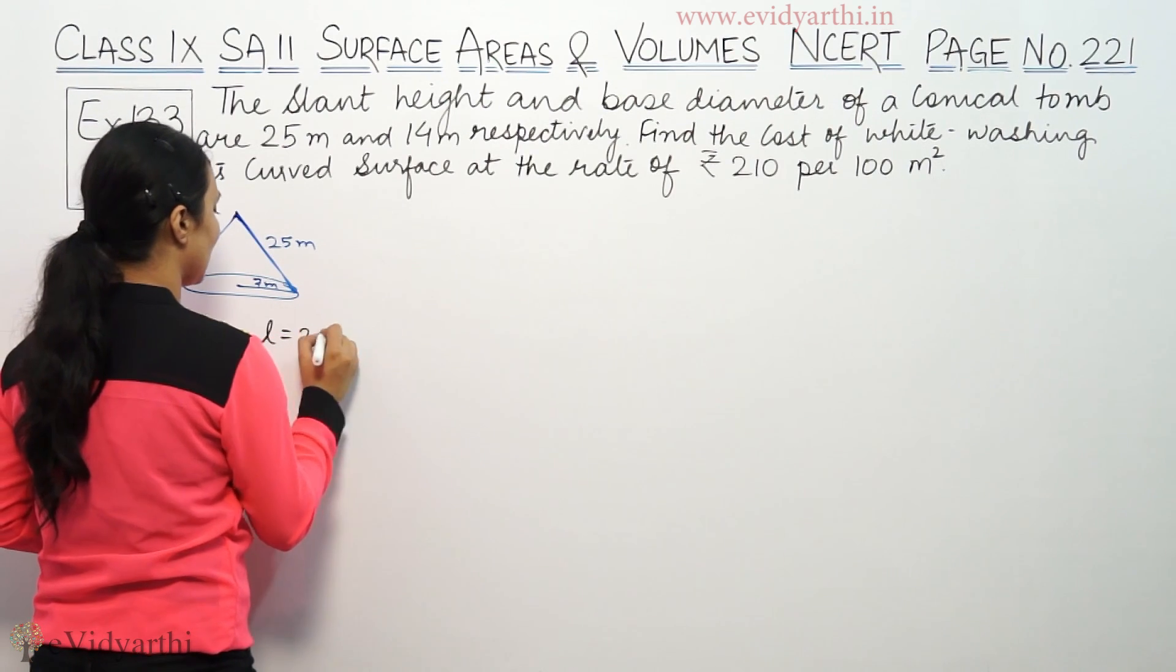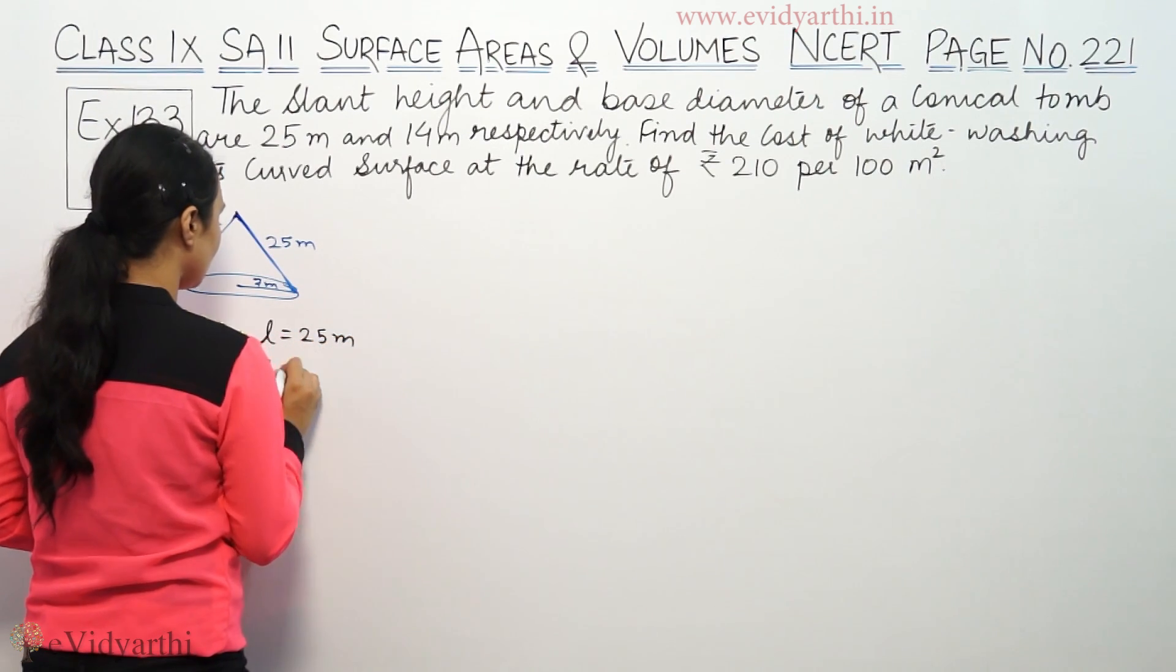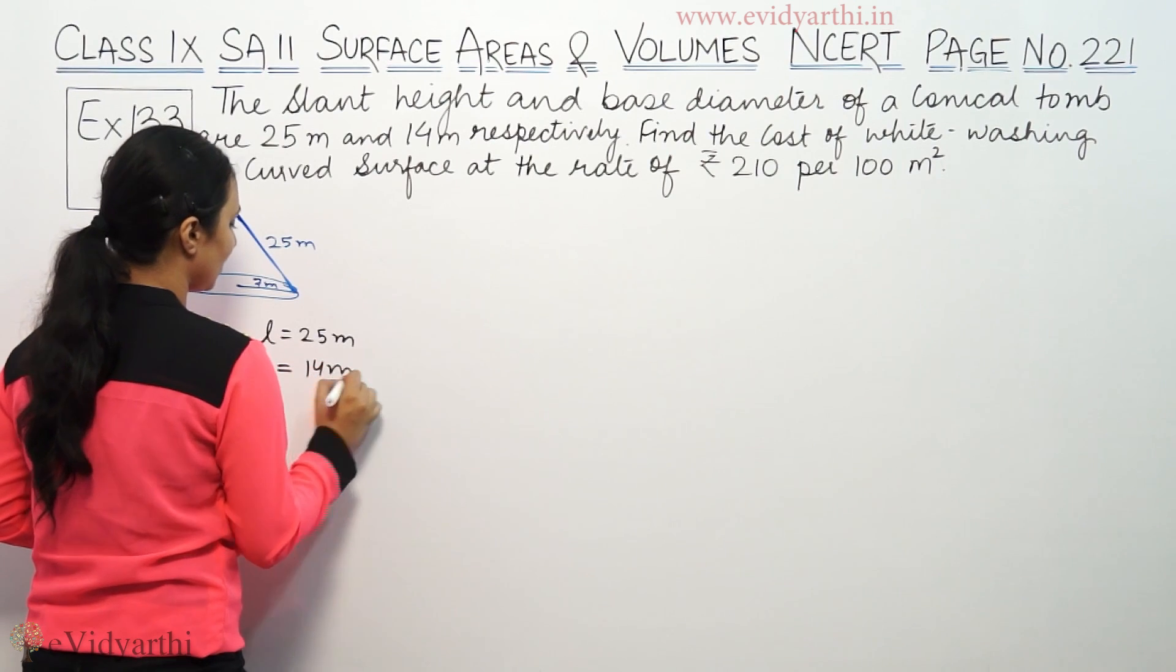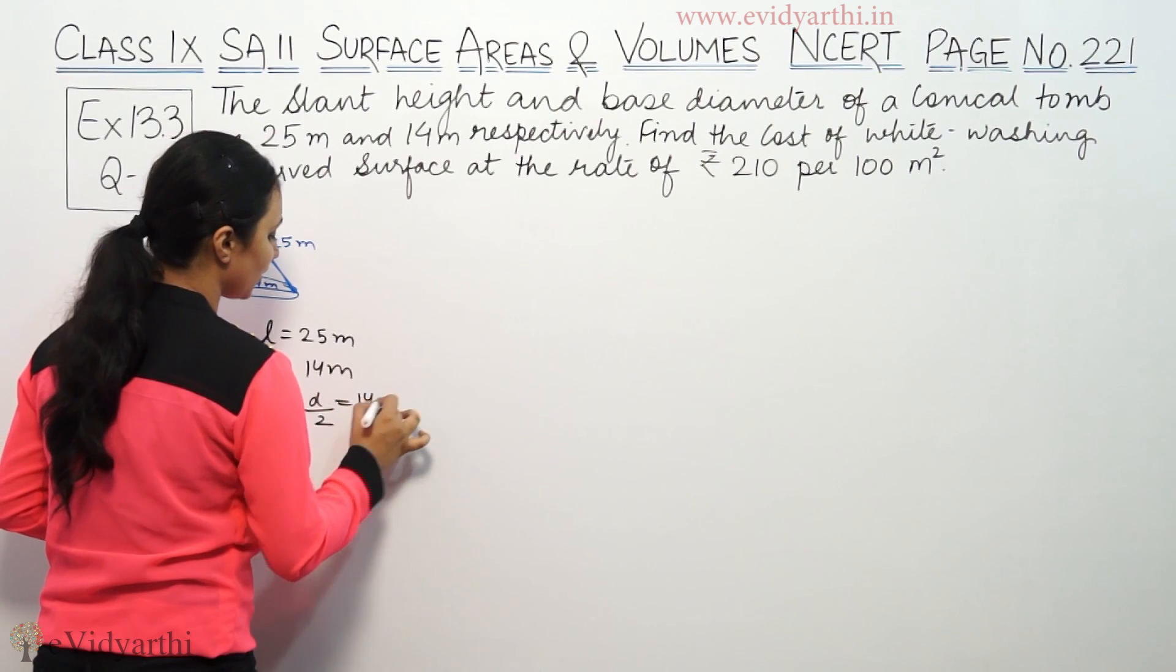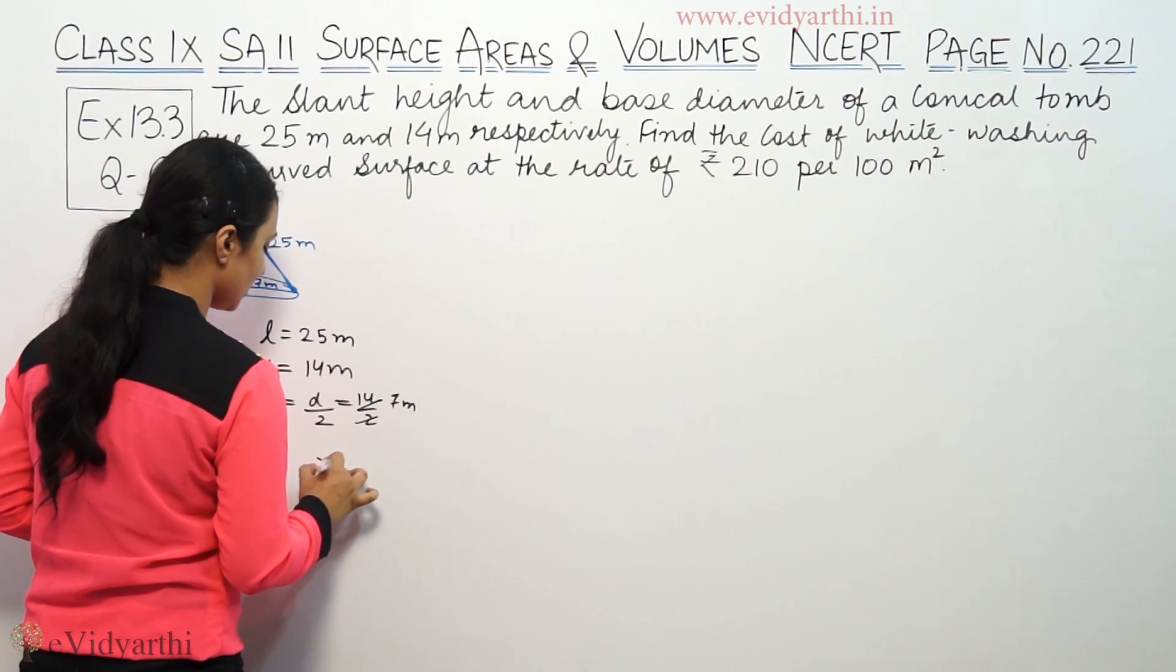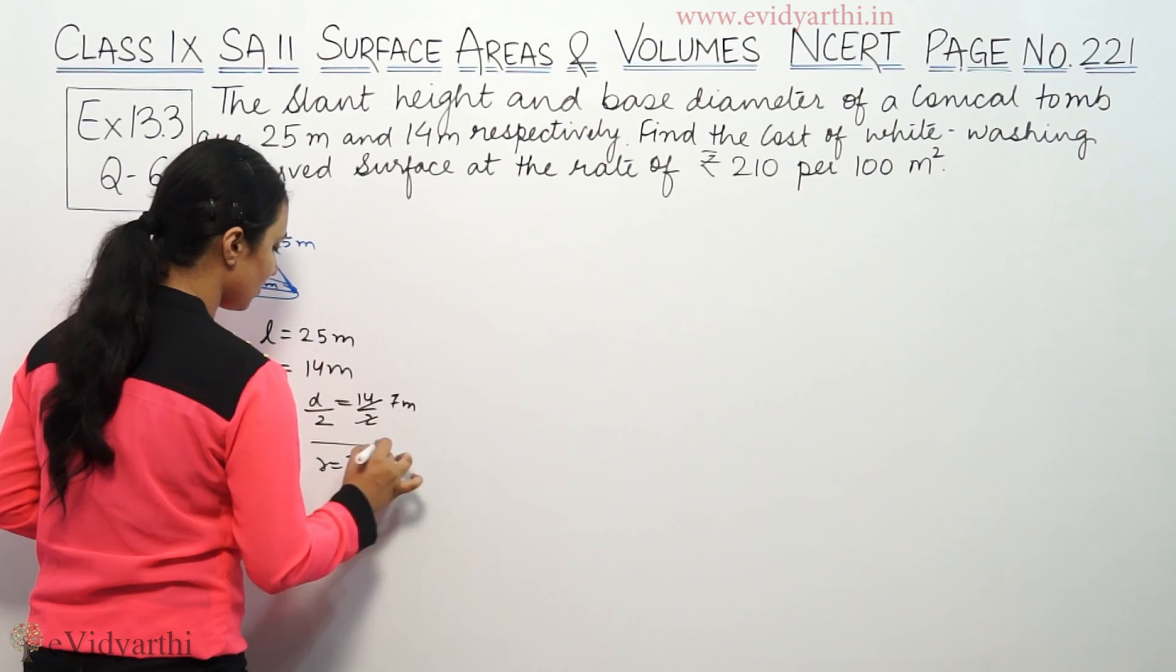So L, slant height, is 25. Diameter is given as 14, so radius is diameter by 2, which is 14 by 2, which is 7 meters.